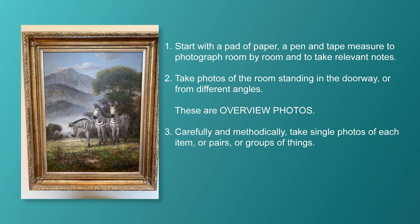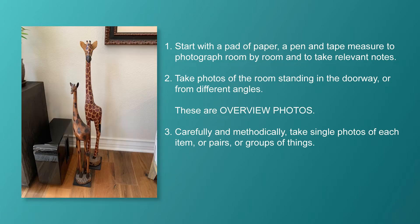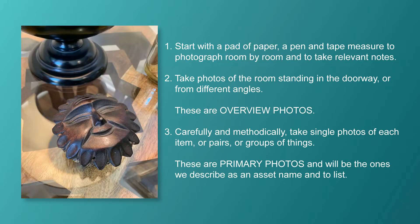Then carefully and methodically take single photos of each item, or pairs or groups of things the way one would want to keep together. These are primary photos and will be the ones we describe as an asset name and list.